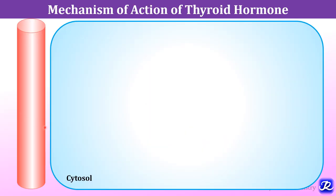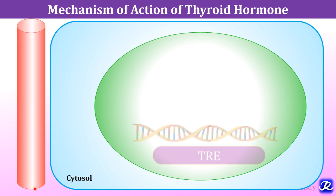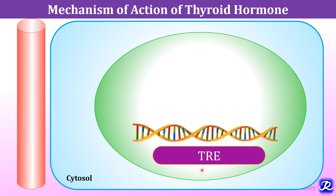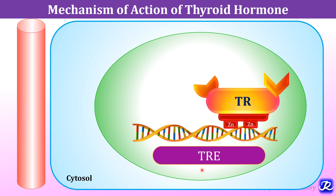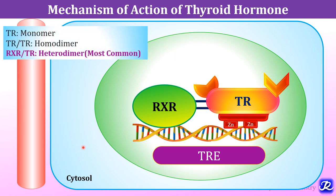In this schematic representation, the cell has a nucleus with DNA containing the thyroid response element. The thyroid receptor binds to the thyroid response element using its DNA binding domain with two zinc finger motifs. This thyroid receptor forms a heterodimer with retinoid X receptor, though it can also bind as a monomer or homodimer. Forming a heterodimer with retinoid X receptor is the most common presentation.